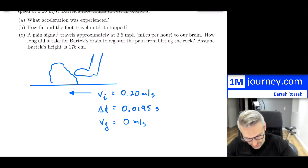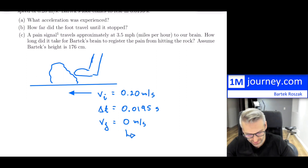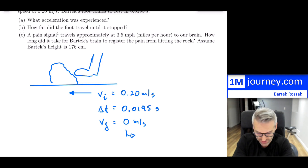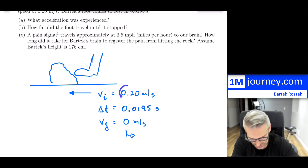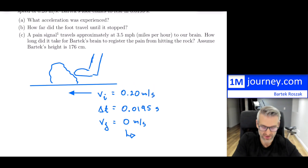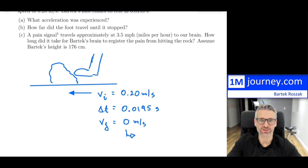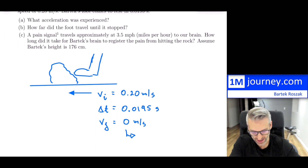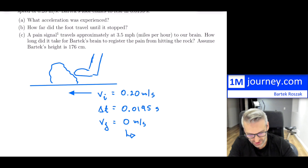In terms of significant figures: 0.2 has two significant figures, 0.0195 has three. When a problem says 'rest,' meaning zero, you can assume it has infinite precision — it's a precise measurement, not zero sig figs. So assume it has an infinite number of significant figures when they say rest.